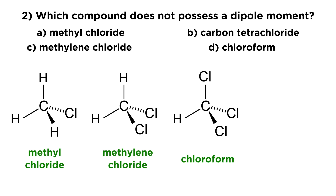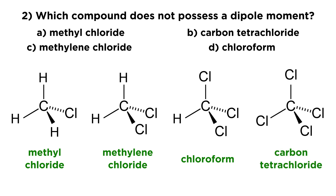Chloroform means CHCl3, replacing yet another hydrogen atom with another chlorine atom. And carbon tetrachloride — tetra means four — so we've replaced all four hydrogens, giving us CCl4. These four molecules are just methane with progressively more hydrogen atoms replaced by chlorine atoms.